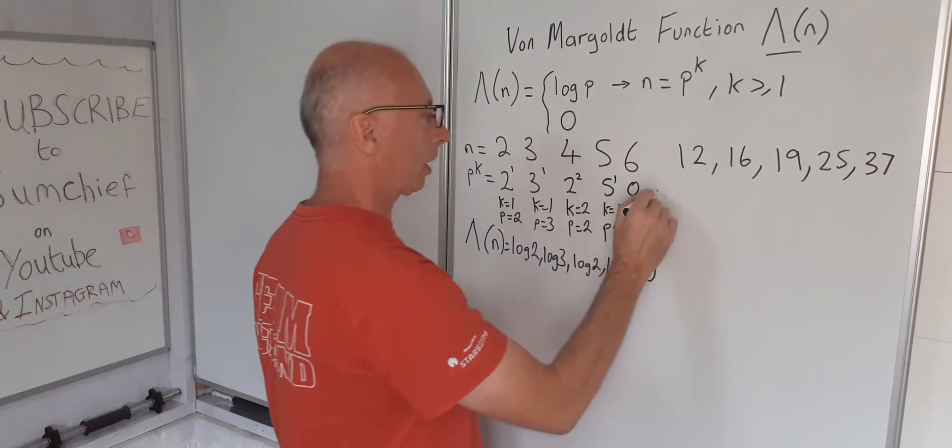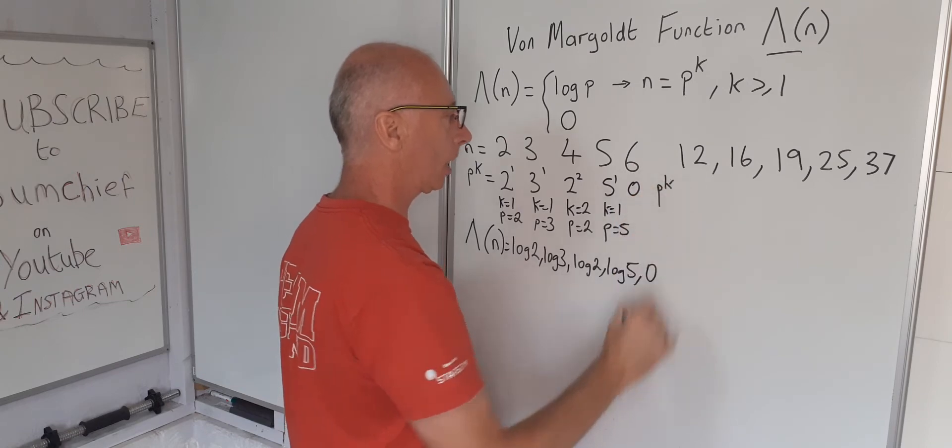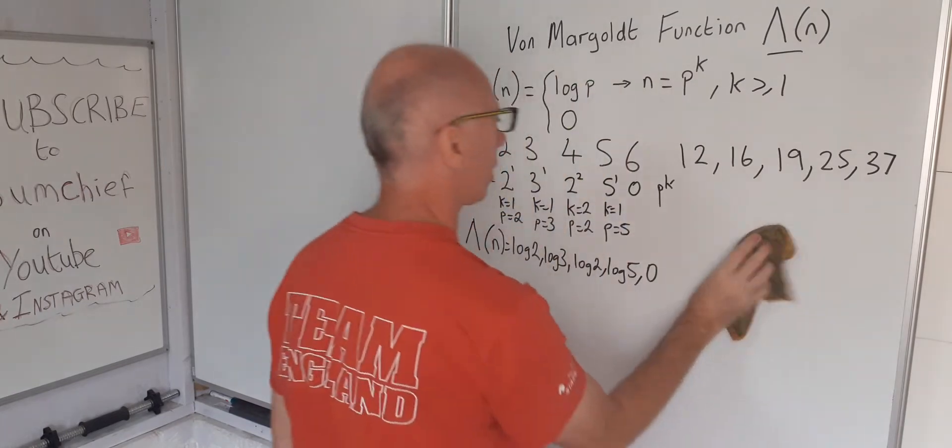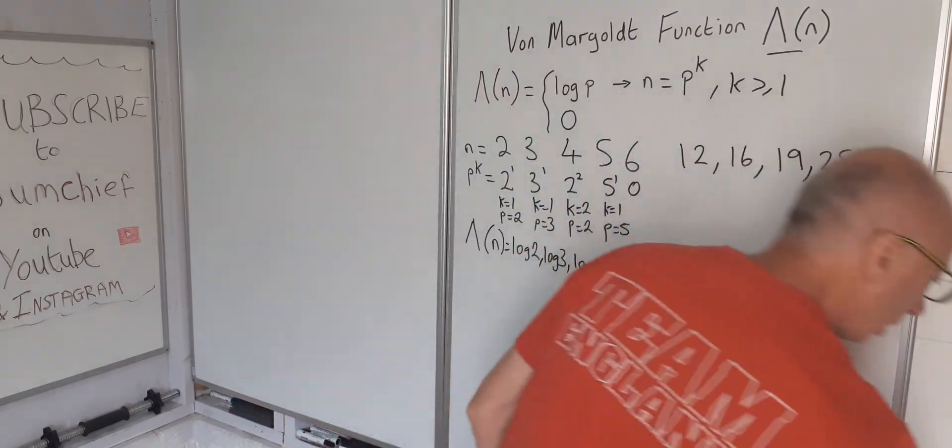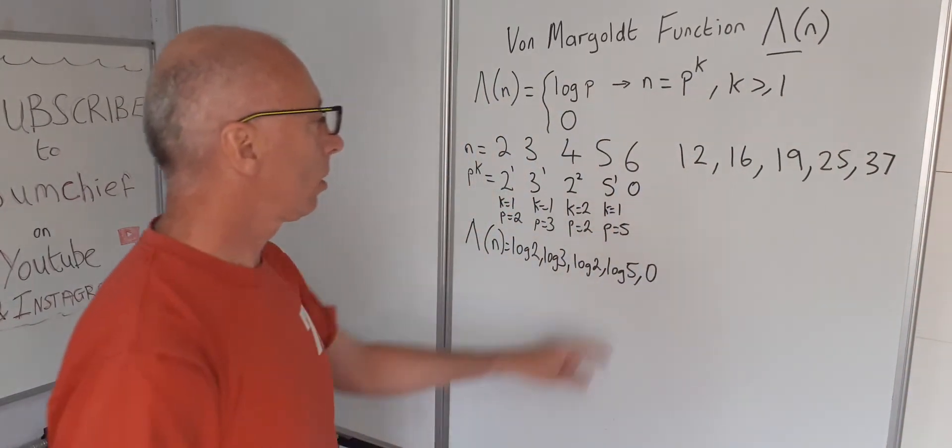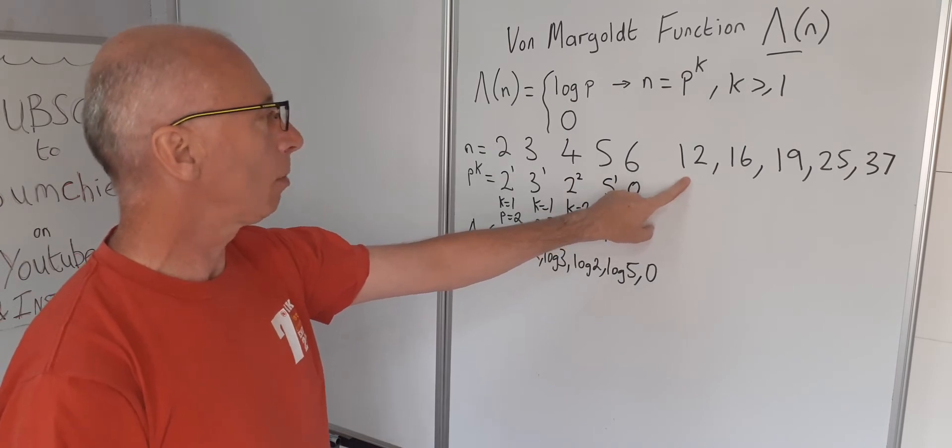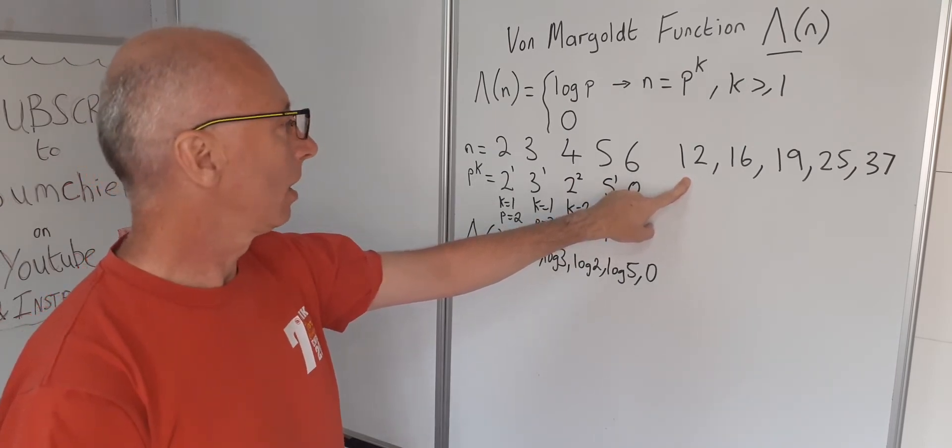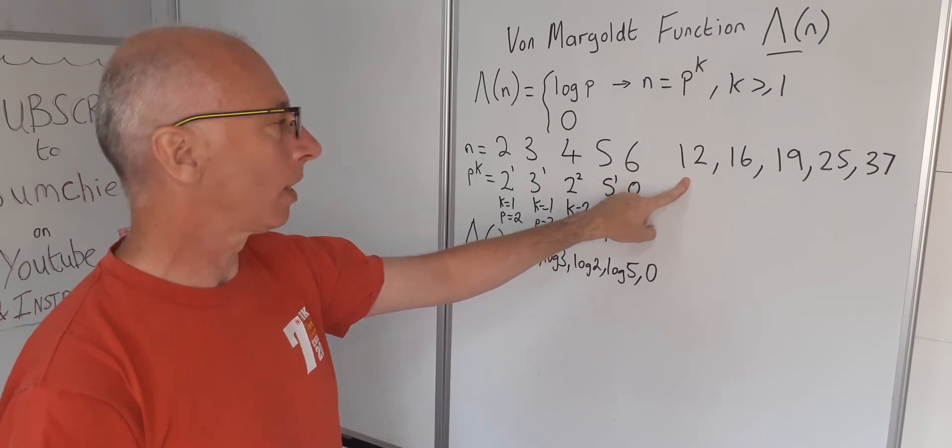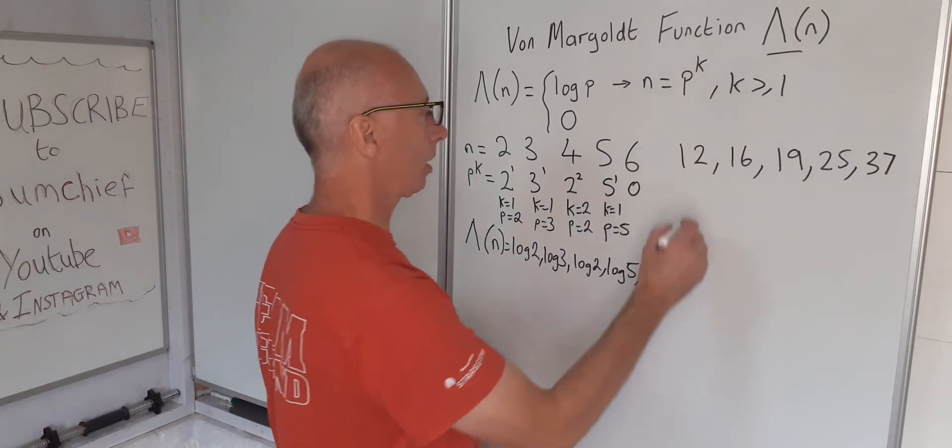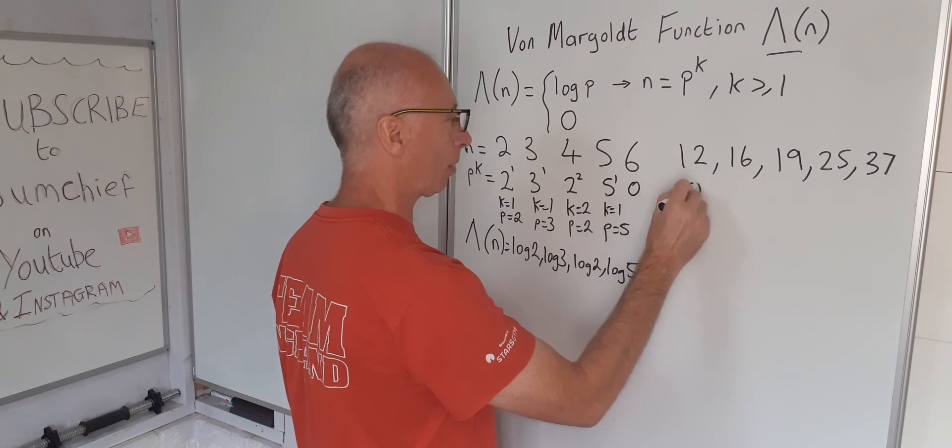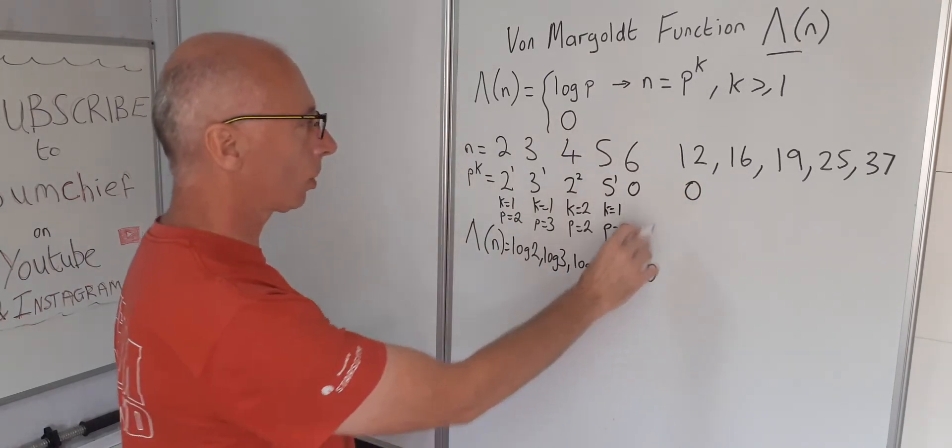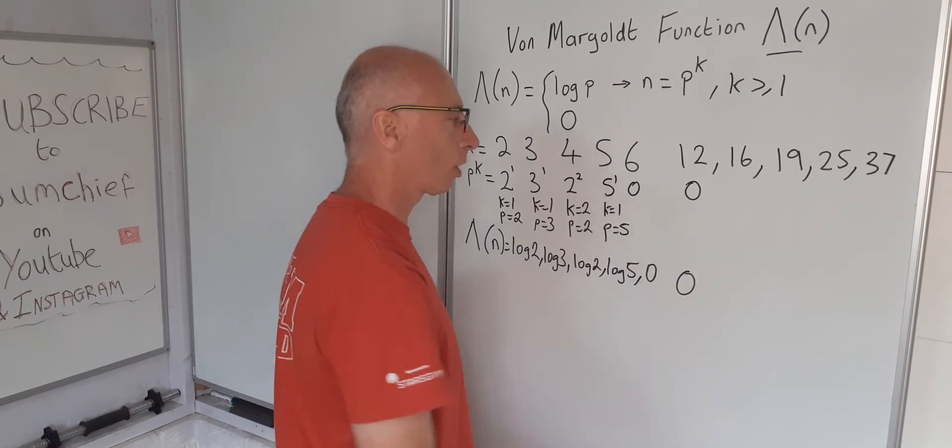Twelve. Can we get P to the K? Okay, so for twelve, P to the power of K. Well twelve is three times two squared, so we've got a two squared but we need a three as well. So in this case we can't make this happen, so that becomes zero. In which case the value of the von Mangoldt function for twelve will also be zero.